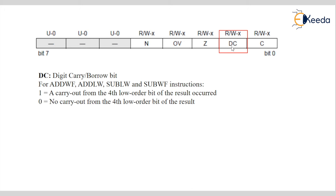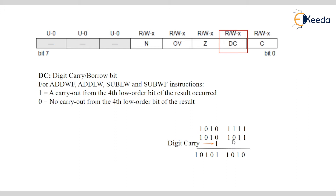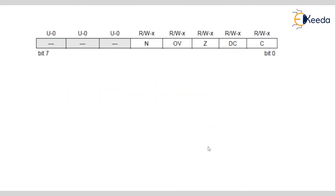In the example: 1 plus 1 is 0, then 1 plus 1 with carry gives 1 plus 1, which is 0 with carry 1. The carry is generated during the 4th bit addition. That carry goes to add into the 5th digit — that carry is called the Digital Carry. The same applies for subtraction as well.